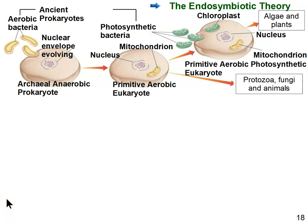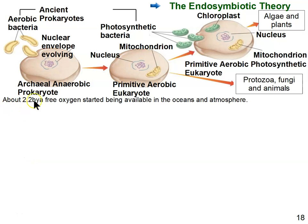We just covered the evolution of prokaryotic cells, the first living things on Earth. They eventually evolved the ability to photosynthesize, possibly as early as about 3.5 billion years ago. The oxygen was first released into the oceans bound to iron, but then eventually free oxygen became available in the oceans and then in the atmosphere approximately 2.2 billion years ago.